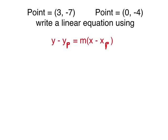Now let's write another linear equation, but this time instead of being given a slope, we're given two different points. We could use either point to plug in for yp and xp — it doesn't matter, we'll still get the same answer. But first we need to figure out the slope because we don't have that. Since we have two points, we can figure out the slope using the slope formula, which is y2 minus y1 all over x2 minus x1.